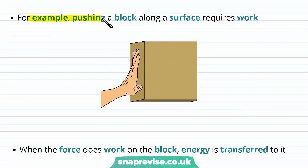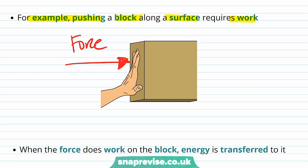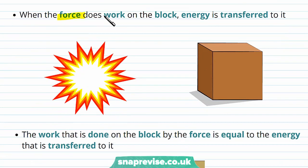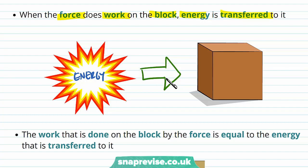Pushing a block along a surface requires work. If we apply a force to this block in order to push it along a surface, we do work on it. By applying the force, the block then moves with a certain velocity v. When the force does work on the block, energy is transferred to it. So when you apply the force to the block, we're transferring energy, which is why it's then able to move.